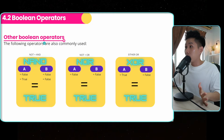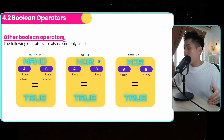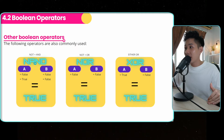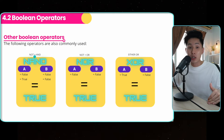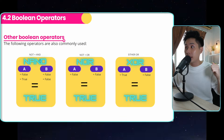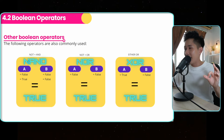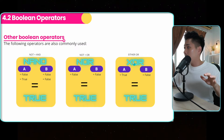The other Boolean operators we'll explore are NAND, NOR, and XOR. NAND is basically an AND gate plus a NOT — it's the negation of AND. NOR is NOT plus OR. XOR stands for 'exclusive OR,' or either OR.